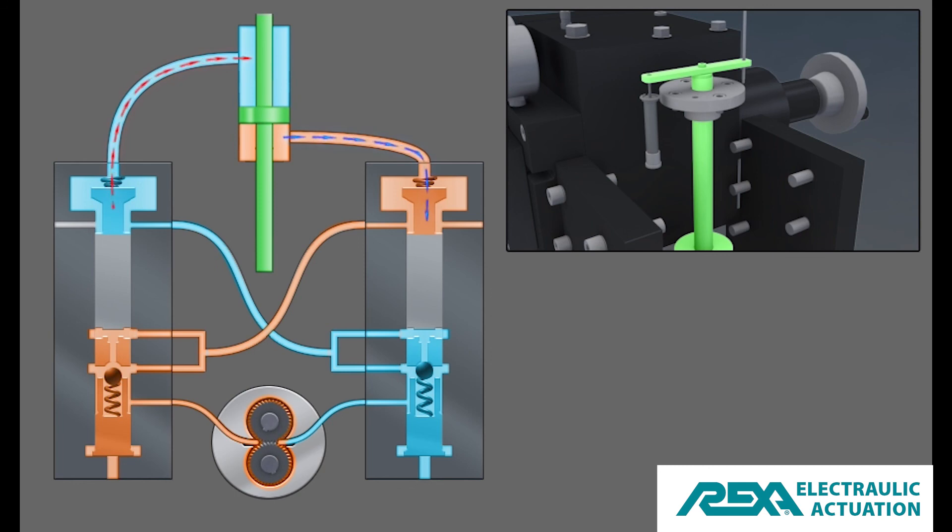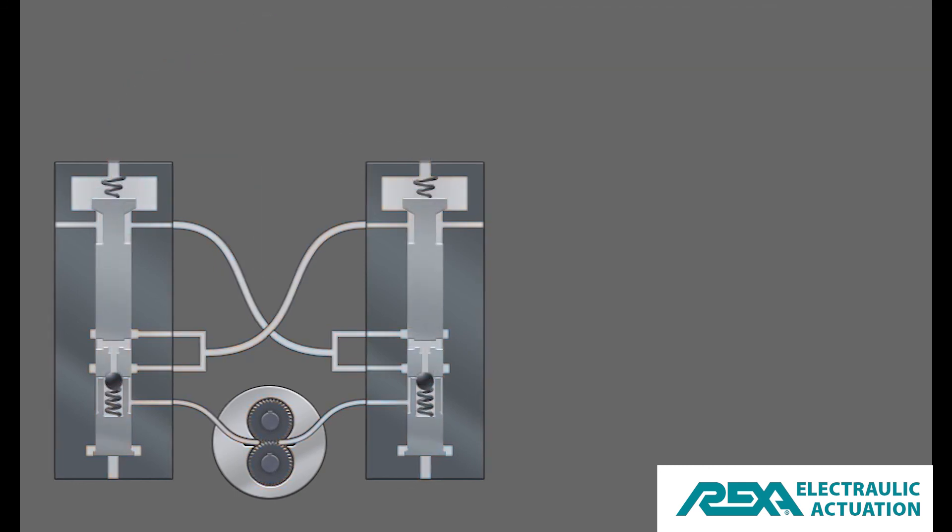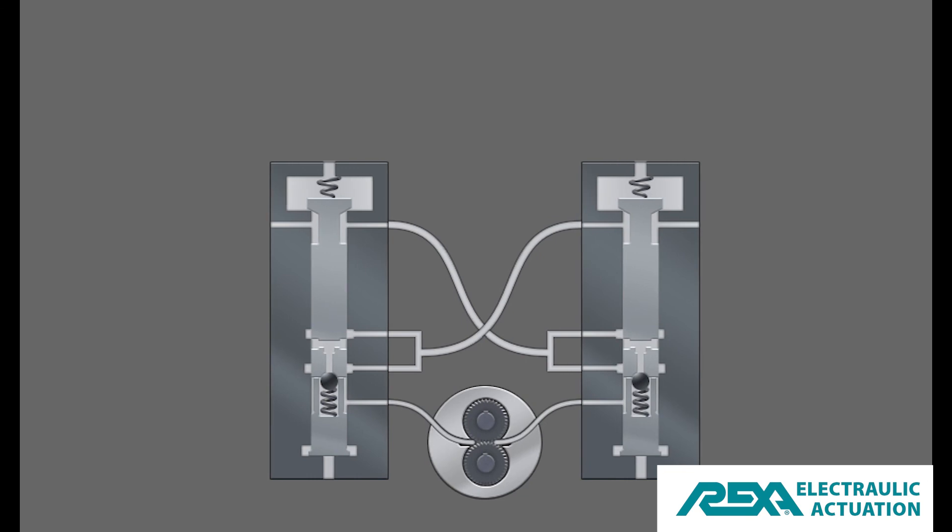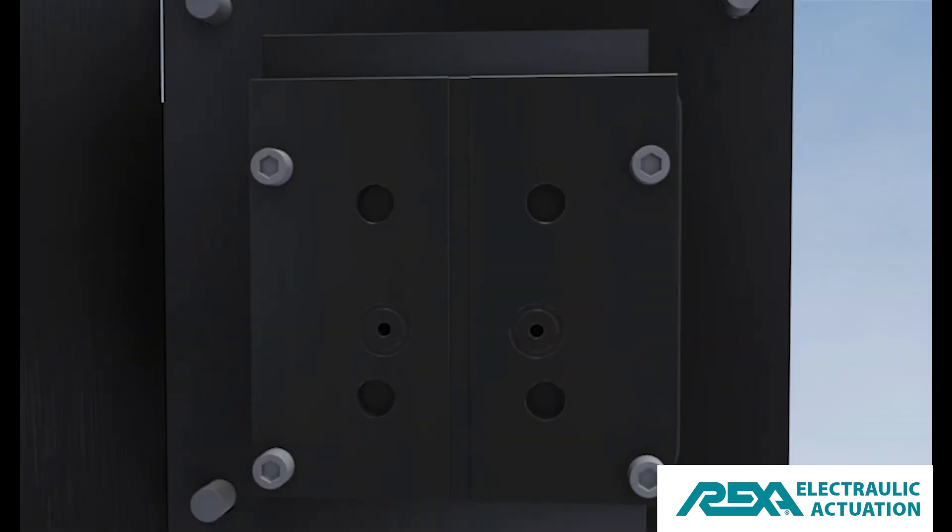Once the valve reaches the desired position, the pump will stop, the flow match valves will return to their normal position, and the valve actuator will be locked in its current position.